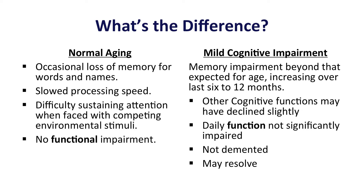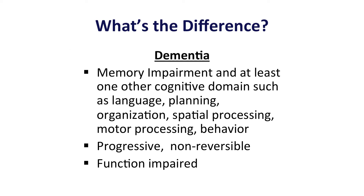In dementia, we see memory impairment and impairment in at least one other cognitive domain, such as language, planning, organization, spatial processing, motor processing, or behavior. These difficulties are progressive, generally non-reversible, and function is impaired.